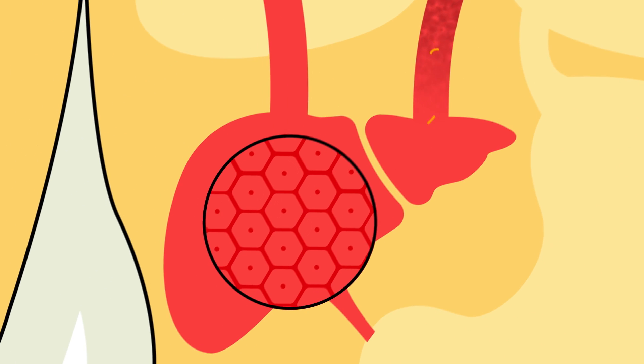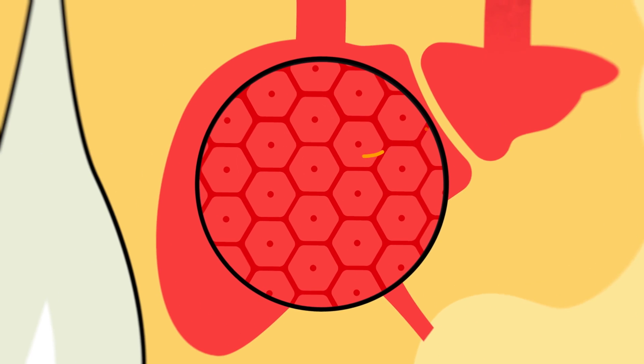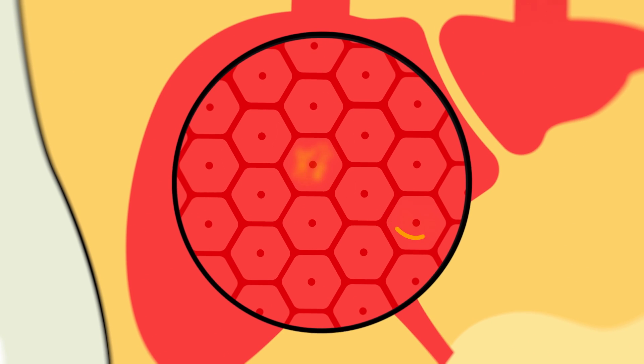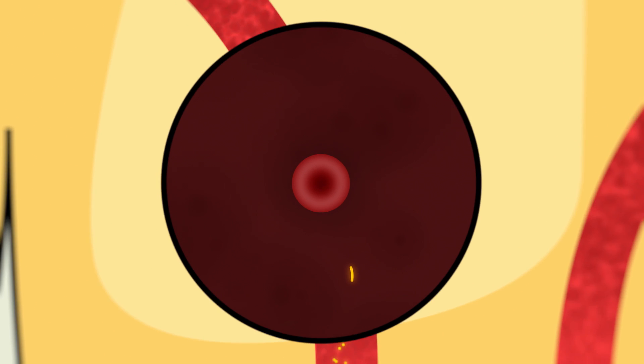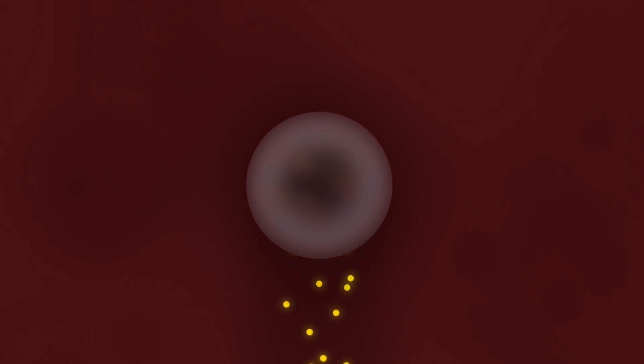The sporozoite then rides in the bloodstream towards the human liver. Once it arrives, it enters a liver cell, where it undergoes many rounds of division and multiplication. A single infected liver cell can lead to the creation of thousands of new parasites. These new parasites then migrate to infect red blood cells, where they can hide from the body's immune system, consuming the contents of the red blood cell and dividing to create even more parasites. Eventually, the red blood cell ruptures and new parasites called merozoites are released, continuing the cycle by invading other red blood cells, which subsequently also rupture.